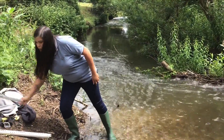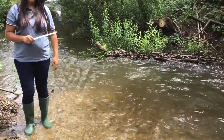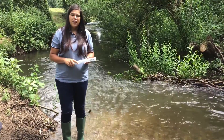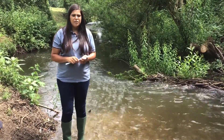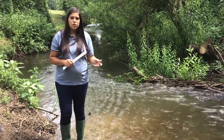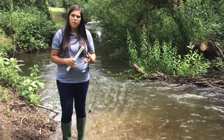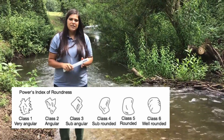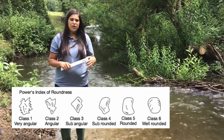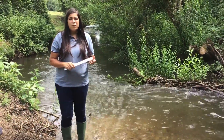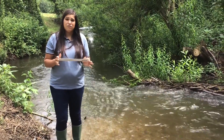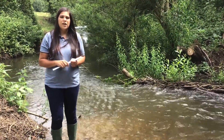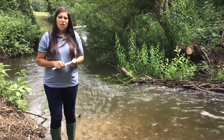Finally, we're going to measure the bed load size. We'll take ten pieces of bed load from the centre of the river, measure the length, width, and depth of each, and create an average. We'll pick these randomly — not choosing which ones look the prettiest. We're also going to look at Powers' index of roundness, which is a class from one to six, and see how round they are, then compare them with the other site. A limitation is that I'm just using a ruler; to be more accurate we could use calipers, which give a very precise digital measurement of the rock size.